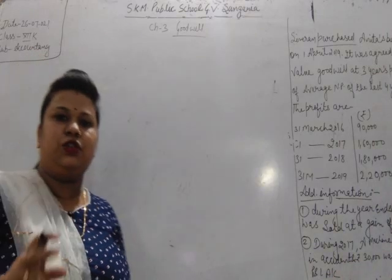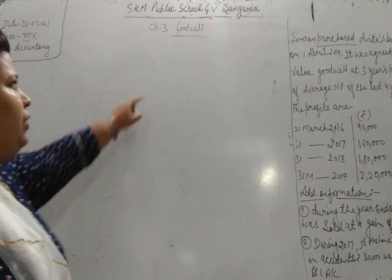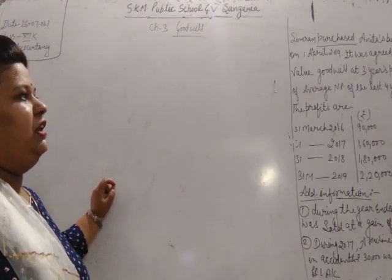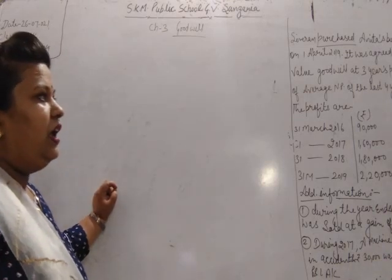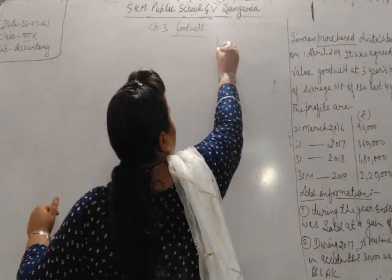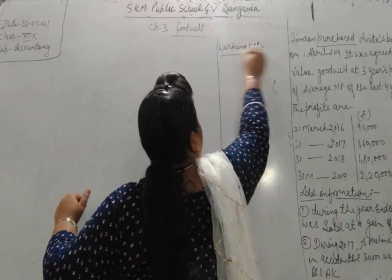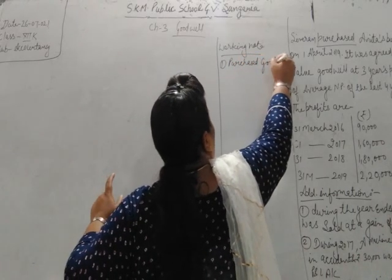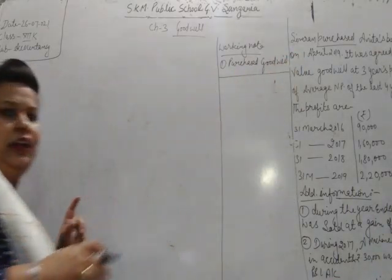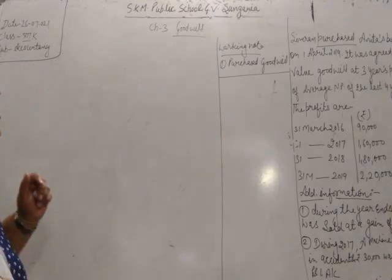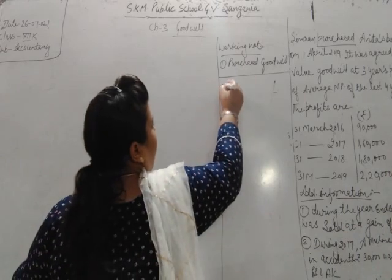The first condition of Goodwill valuation is that it must be purchased Goodwill. In this question itself it is given that the Goodwill is purchased. I have told you that valuation of Goodwill will be done only for Goodwill which is purchased. These notes confirm it is related to purchased Goodwill. Second, it was agreed to value Goodwill at three years' purchase of Average Profit — so for three years we will value the Goodwill.